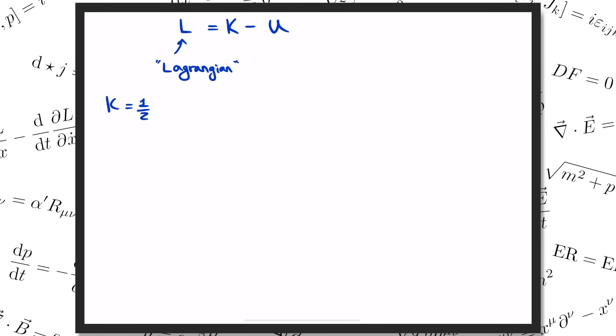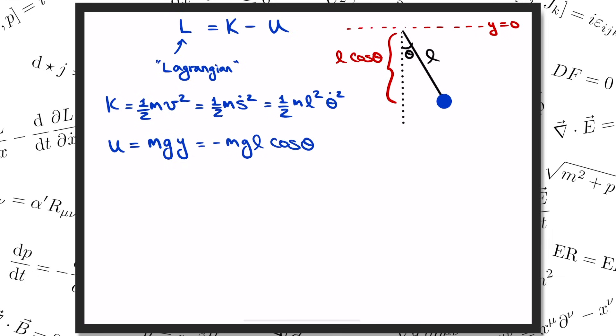The kinetic energy K is of course just 1 half mv squared, where v equals s dot is the speed of the particle. Actually I'd like to write everything in terms of theta, so I'm going to replace s dot with L times theta dot. Then the kinetic energy is 1 half m L squared theta dot squared. The potential energy U meanwhile is just mg times y, the height of the particle above some chosen ground level. I'm going to put ground level at the height of the pivot. Then the y coordinate of the particle is minus L cosine theta, and the potential energy is minus mg L cosine theta. So the Lagrangian for our pendulum is the difference between the kinetic energy and potential energy. That's 1 half m L squared theta dot squared plus mg L cosine theta.